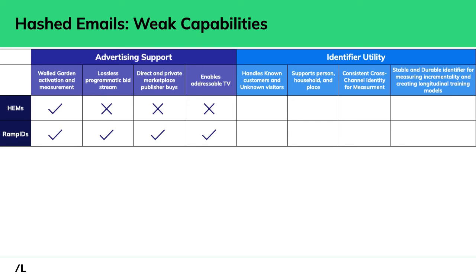Direct and private marketplace buys — yes. Addressable TV — yes. In terms of utility for your use of customer data, RampID works for both known and unknown customers. If you don't have an email and you're working with a digital segment, RampIDs are just as effective as when creating a segment from known customers. It's a single solution for both cases. RampIDs also provide not just person-level addressing but also household and place-level information, all from the same identifier.